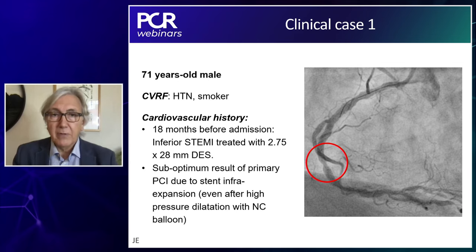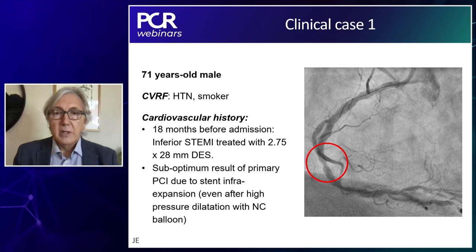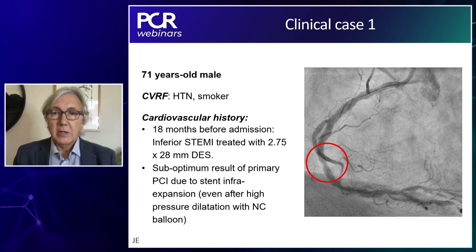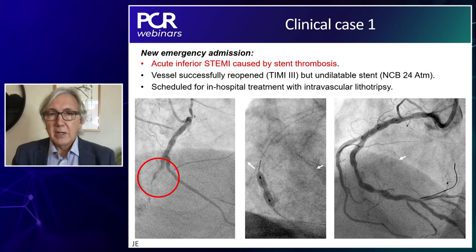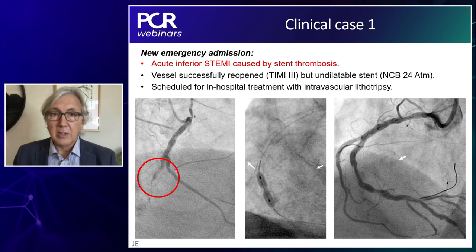The first case is a 71-year-old gentleman with cardiovascular risk factors. He had an inferior ST-elevation myocardial infarction, and the operator during the night had trouble expanding the stent. He did his best, used high-pressure balloons, but there was a residual narrowing left in the vessel. Because there was TIMI 3 flow, the case was deemed successful. However, later the patient came back with a new ST-elevation myocardial infarction due to stent thrombosis.